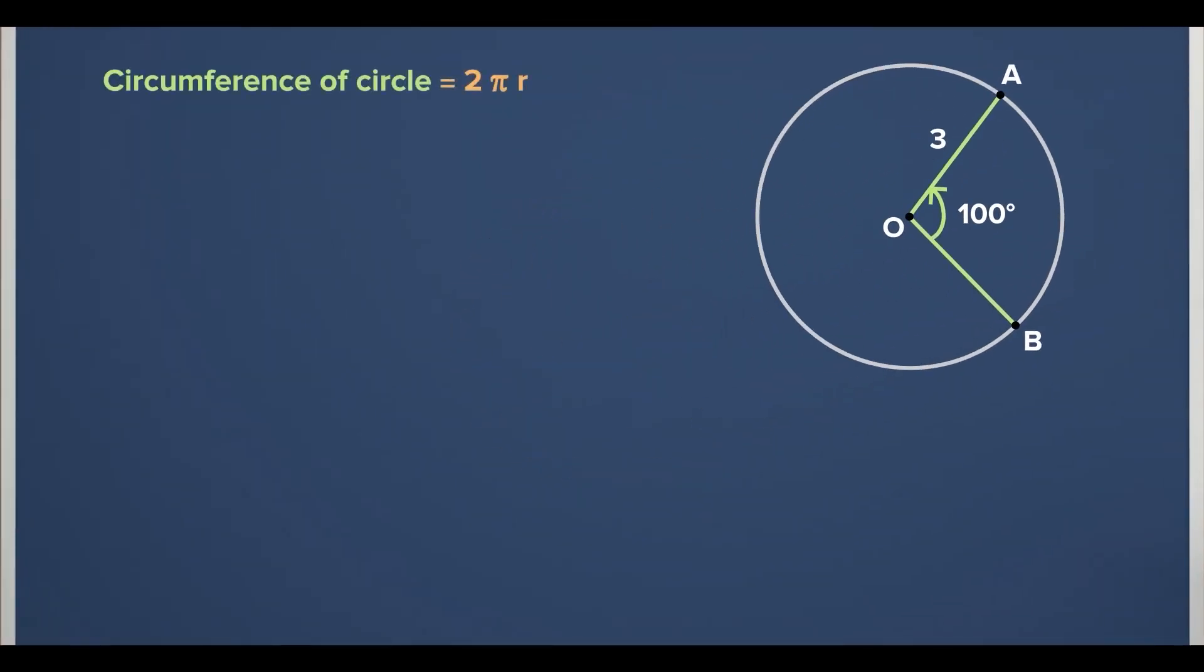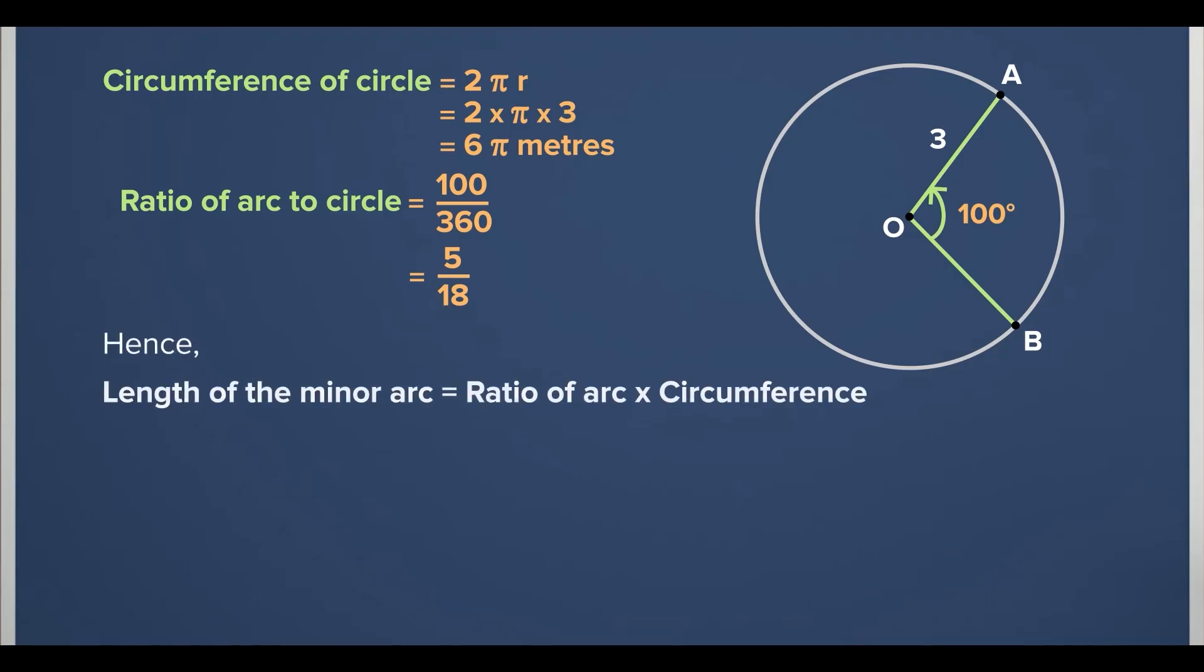The circumference of the entire circle is 2 pi r, which is 6 pi meters. The arc's ratio to the entire circle is 100 divided by 360, which is 5 over 18. Hence, the length of the minor arc would be the ratio of arc times the circumference, and the length of the minor arc is calculated to be 5 over 3 times pi units.